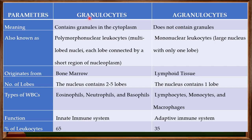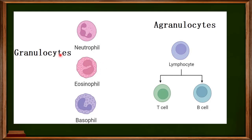Granulocytes are sometimes also known as polymorphonuclear leukocytes, meaning the nucleus of these granulocytes has multi-lobed nuclei, with each lobe connected by a short region of the nucleoplasm. Looking at this image, these are the granulocytes — neutrophils, eosinophils, and basophils — and you can see the shape of the nucleus with three lobes connected to each other by part of the nuclear membrane.